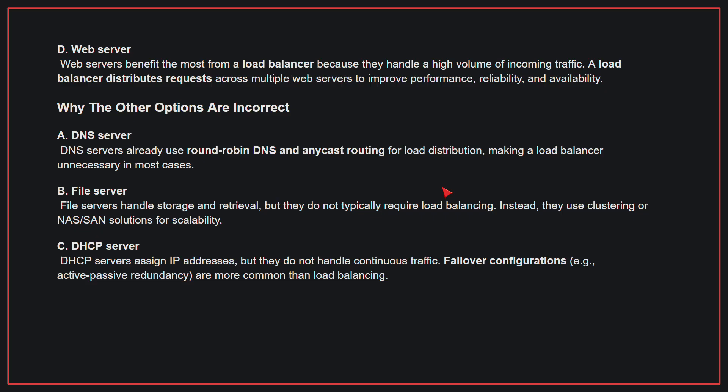Why the other options are incorrect? A. DNS server — DNS servers already use round-robin DNS and anycast routing for load distribution, making a load balancer unnecessary in most cases. B. File server — file servers handle storage and retrieval but do not typically require load balancing; instead, they use clustering or NAS/SAN solutions for scalability. C. DHCP server — DHCP servers assign IP addresses but do not handle continuous traffic; failover configurations are more common than load balancing. Therefore, the correct answer is D, web server.